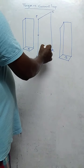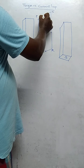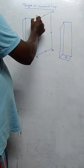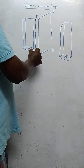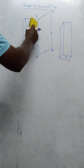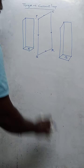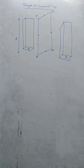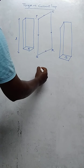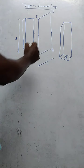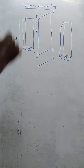Let us assume that the current flows through the circuit in the anticlockwise direction. L is the length of the current-carrying conductor, and B is the width. Let me denote the length and breadth. L is the length of the current-carrying conductor, and I is the strength of the current flowing through the conductor in the anticlockwise direction.